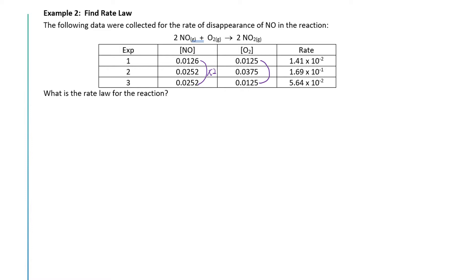Between experiment numbers 1 and 3, it looks like oxygen remains the same and NO doubles. So we'll want to compare experiments 1 and 3, which will give us the order with respect to nitrogen. Then we want a pair where NO remains constant and O2 changes, and that looks like experiments 3 and 2. So it looks like those will be our pairs: experiments 1 and 3, and experiments 2 and 3.